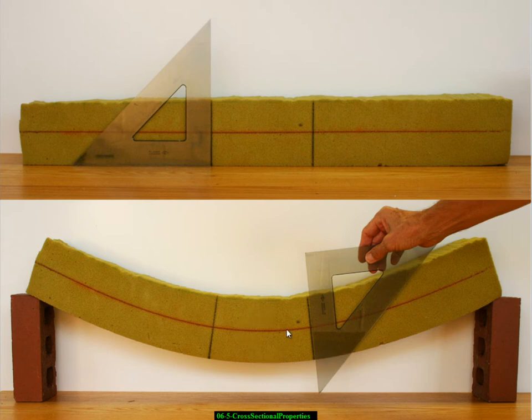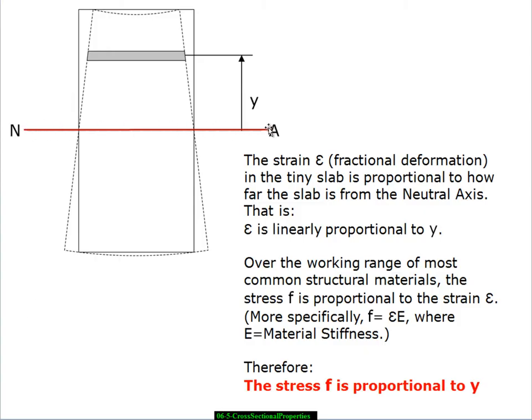And if we drew this slice out of the center of this thing, we could say here is the neutral axis where there's no elongation. The material is compressing on the top and getting shorter. It's being put under tension or stretched on the bottom and getting longer. If we take a little slab of this material somewhere up here, we say the strain or fractional deformation in that slab, in other words, the fraction of shortening in this case, is proportional to how far the slab is from the neutral axis. In other words, you get twice as much deformation there as you get there. We say that the deformation is linearly proportional to the distance y away from the neutral axis.